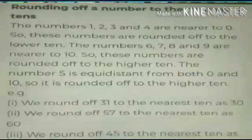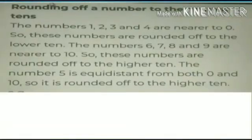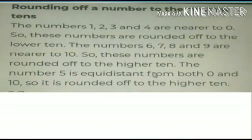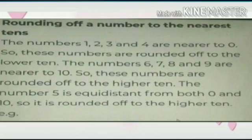Here is an explanation for rounding off numbers to the nearest tens. The numbers 1, 2, 3, and 4 are nearer to zero, so they are rounded off to the lower ten. The numbers 6, 7, 8, and 9 are nearer to ten, so they are rounded off to the higher ten. The number 5 is equidistant from both zero and ten, so it is rounded off to the higher ten.